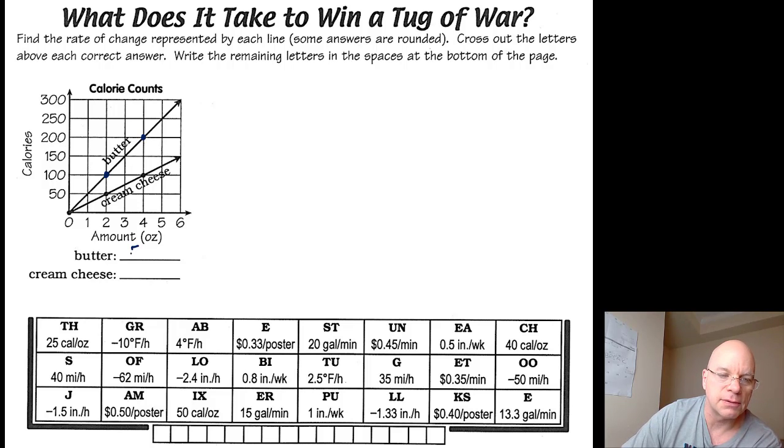Butter comes out to 50 calories per ounce and cream cheese 25 calories per ounce.